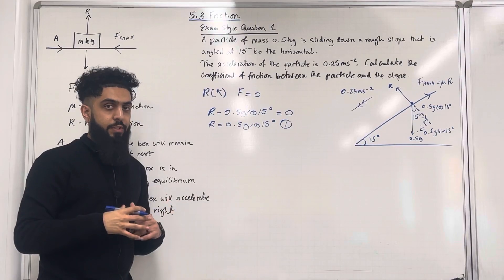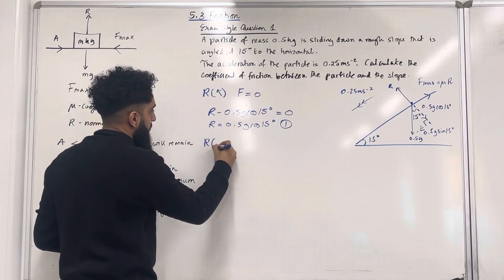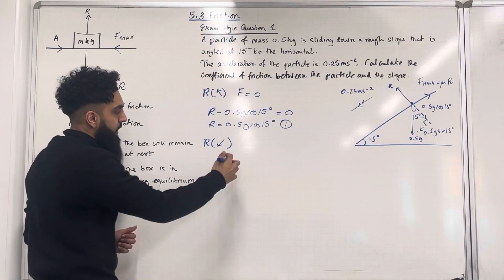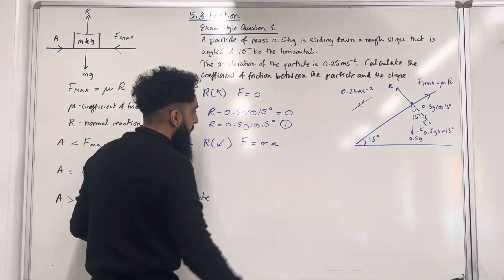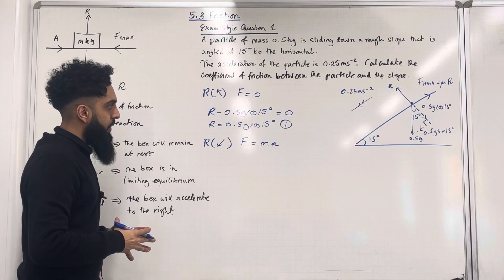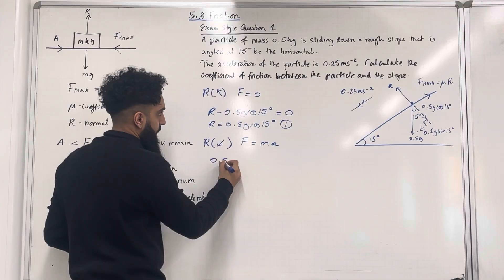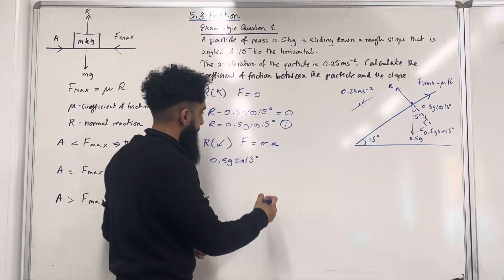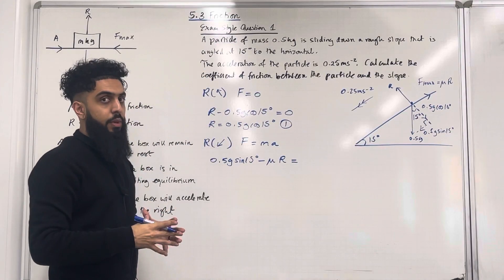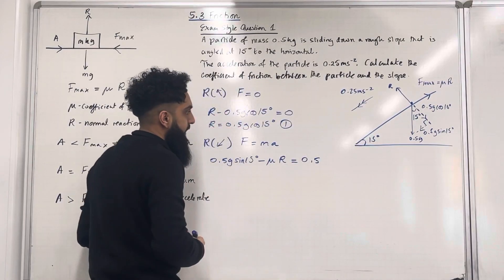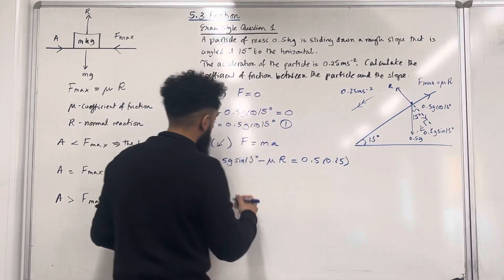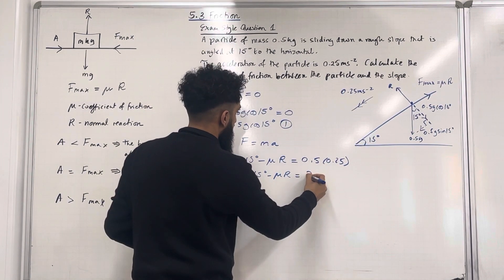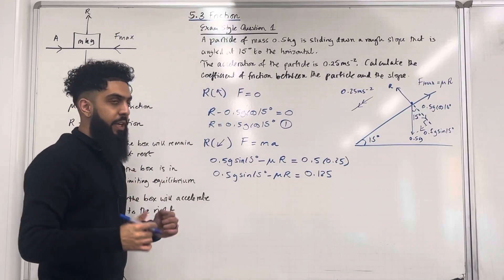Now I'm going to generate equation 2 by resolving parallel to the slope in the direction of the acceleration, which is down the slope — that is the positive direction. Using Newton's second law, F equals ma: 0.5g sin 15 minus mu R equals 0.5 multiplied by 0.25. So 0.5 times 0.25 is 0.125. That is equation 2.